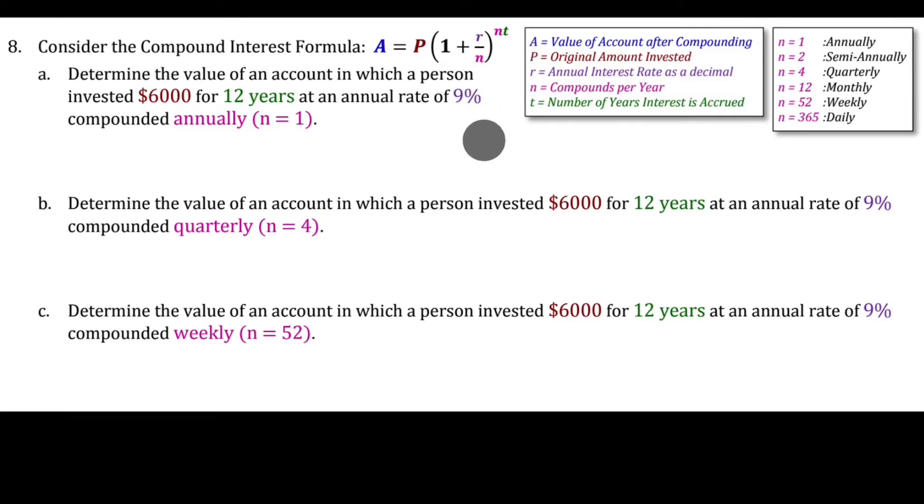T is the number of years the interest is accrued. When discussing compound interest, we use terms like annually, semi-annually, quarterly, monthly, weekly, and daily. Here we've listed how many times each means compounding per year. Annually is one, semi-annually is two, and so on.